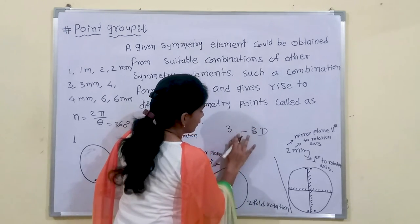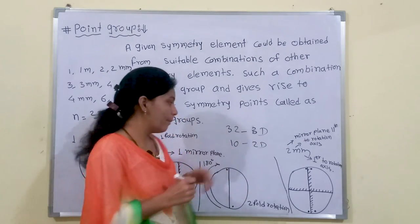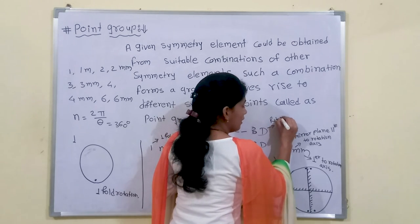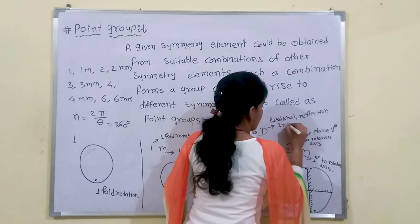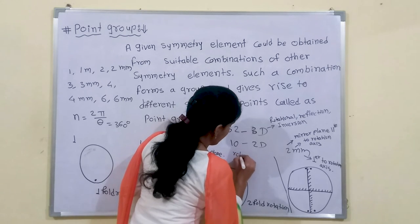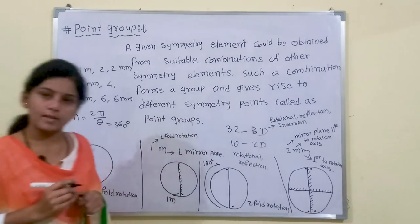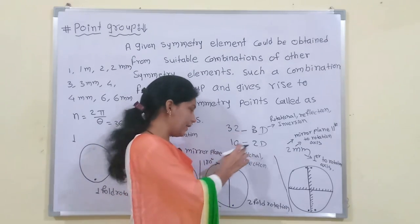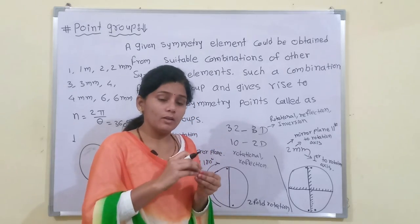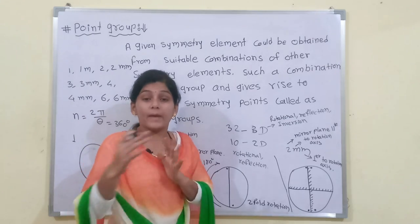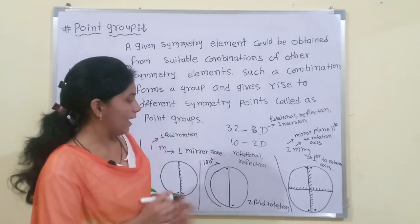If we consider 3 symmetry operations — rotational symmetry, reflection symmetry, and inversion symmetry — we get 32 point groups in 3D. In 2D, only rotational and reflection symmetry operations are present, giving us 10 point groups. From these 32 point groups in 3D and 10 in 2D, we get different combinations called space groups. A space group is the combination of different point groups. Thank you for watching.